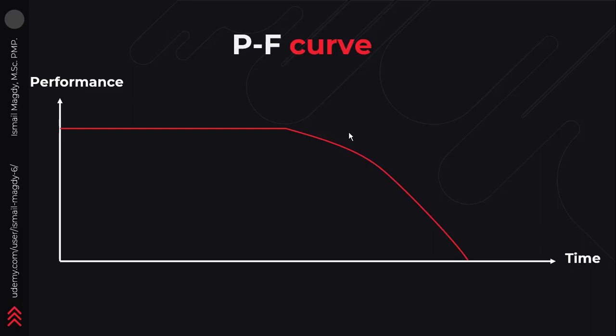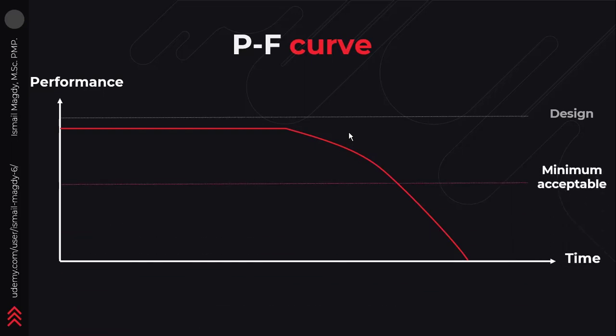In order to have a better understanding of this topic, we are going to discuss one of the most famous curves in maintenance, which is called the PF Curve. The PF Curve is a relation between time and the performance of an equipment. Here we can see those limits — we have the design level of performance and we have the minimum acceptable level of performance. The equipment doesn't necessarily have to be operating at the same exact design performance level; however, it shall start operating at a slightly lower level, and this depends on how efficient was the design and the manufacturing process of that equipment.